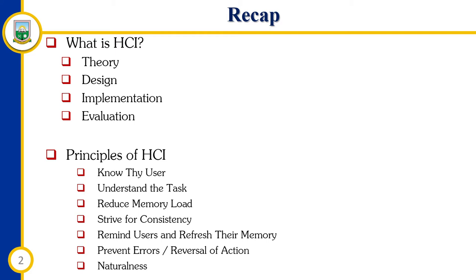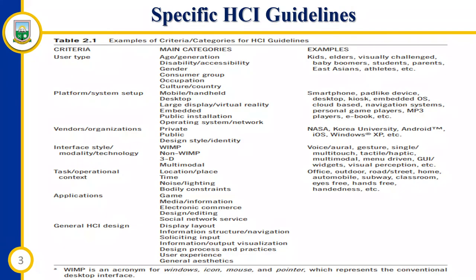HCI, which stands for Human-Computer Interaction, is first of all a cross-disciplinary area that deals with the theory, the design, the implementation and evaluation of the ways that humans view and also interact with computer devices. From there, we got to know of the seven principles of HCI — the first one being 'know the user,' through to the seventh principle which is naturalness. While all these principles are very general and applicable in most areas of HCI design, we are now setting guidelines that tend to be more specific.